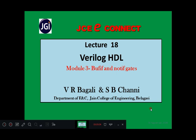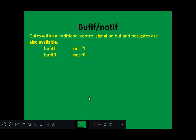Welcome to class, students. In this class we discuss bufif and notif gates. Gates with an additional control signal on buffer and not gates are also available. If the control signal value is 1, it is referred to as bufif1. For a not gate, if control signal is 1, it is notif1.